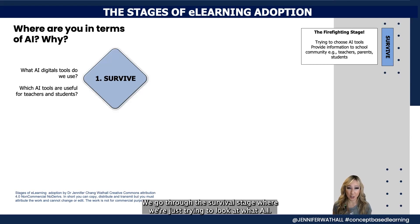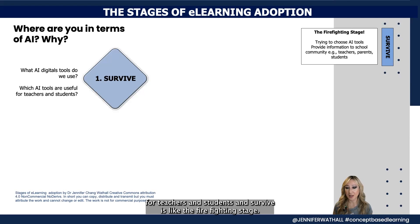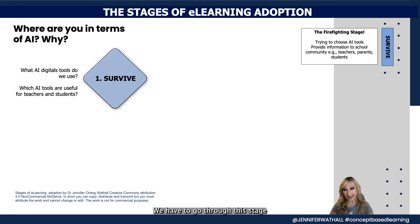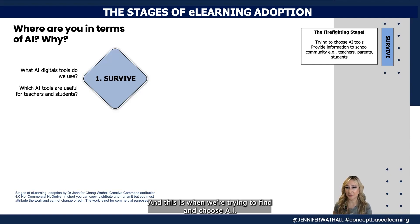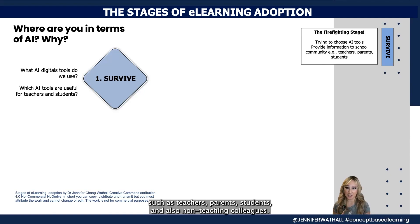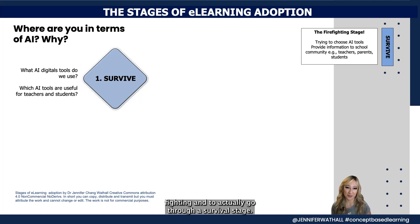The first stage is Survive. In the survival stage we're just trying to work out what AI digital tools to use and which are useful for teachers and students — it's like a firefighting stage. We have to go through this when beginning the journey of any e-learning tool adoption: trying to find and choose AI tools and provide information to the school community — teachers, parents, students, and non-teaching colleagues.